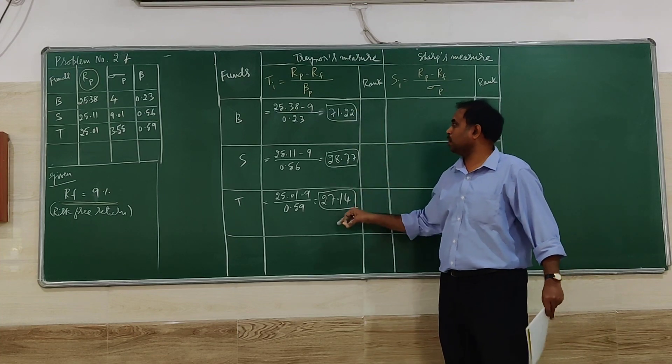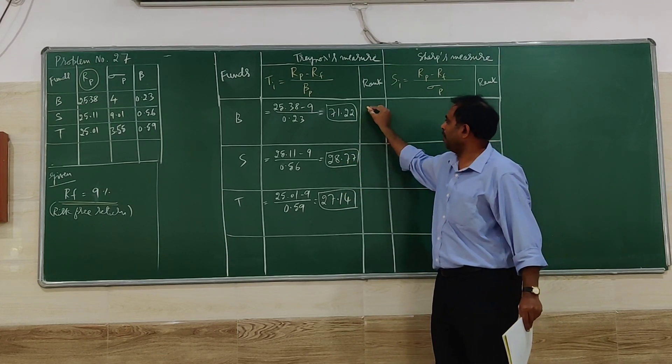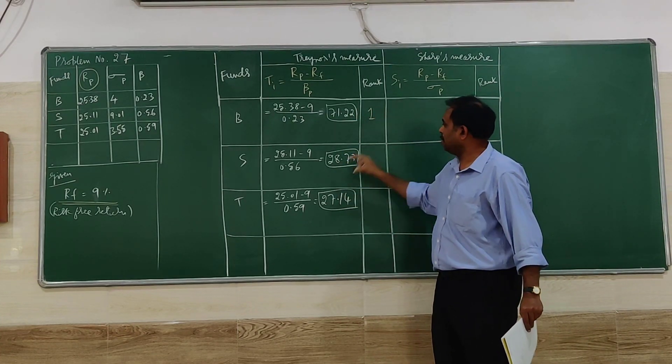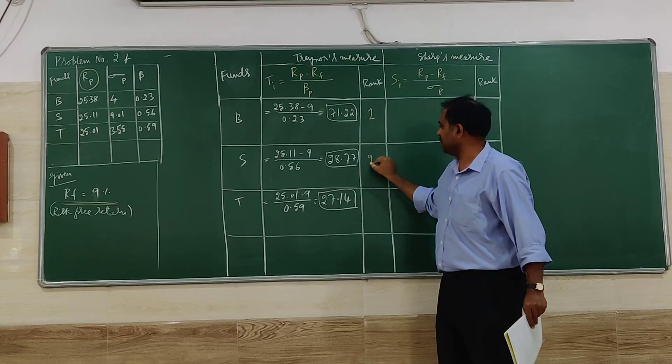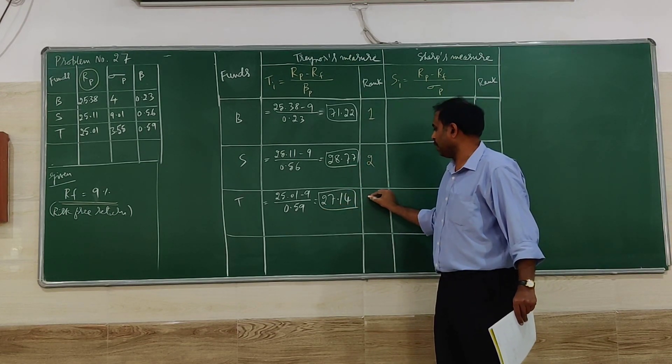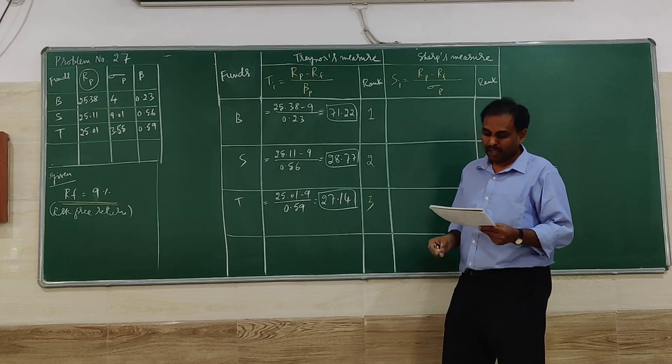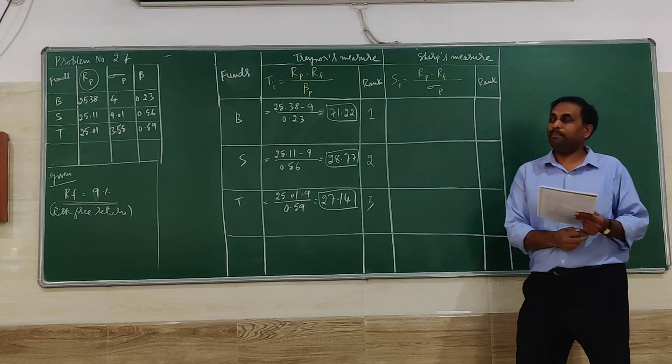We have to rank from highest to lowest: 71.22 is rank 1, 28.77 is rank 2, and 27.14 is rank 3. It's in the same order: 1, 2, 3.